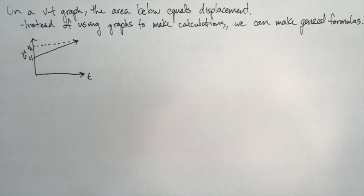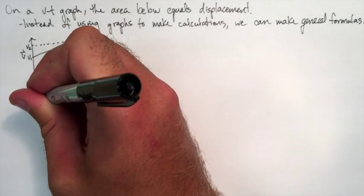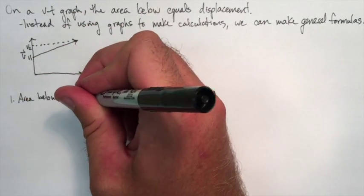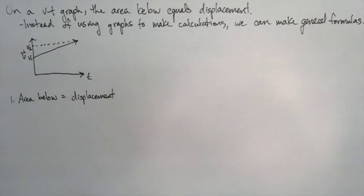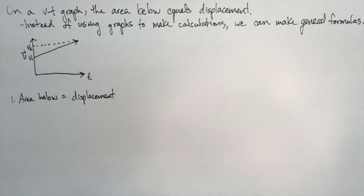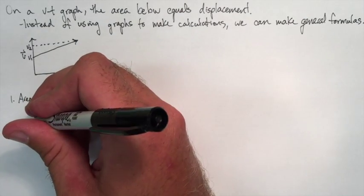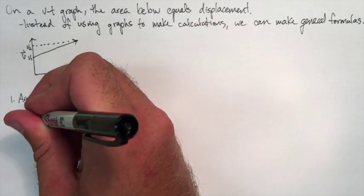First we need to check though, what is the area below this line? We should remember that area below is displacement on a VT graph. But how do we know this? We can check the area, we can check the units.